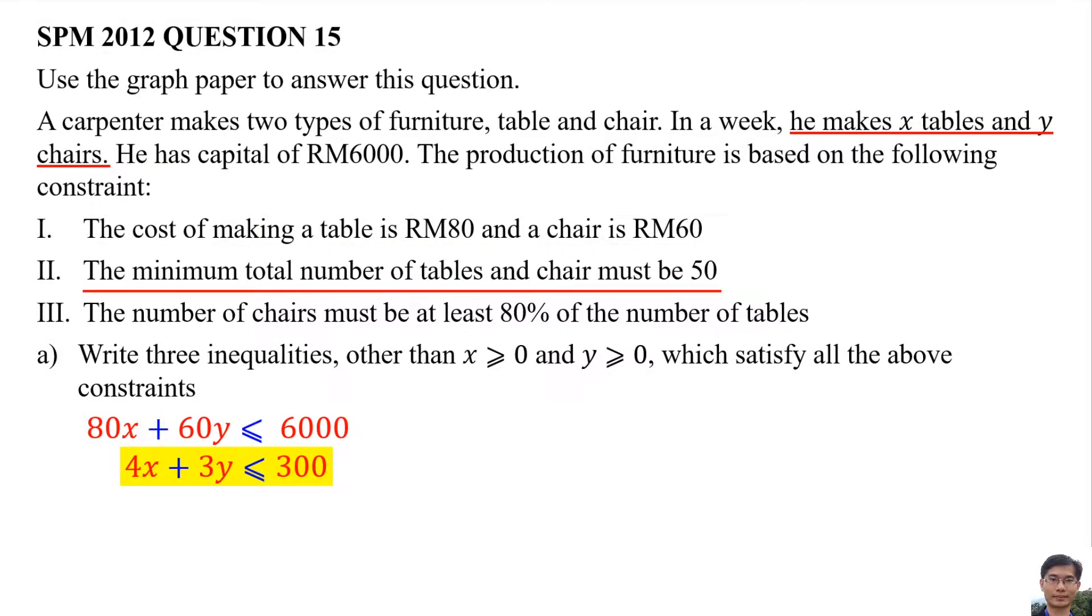The minimum total number of tables and chairs must be 50, so it means X plus Y more than or equal 50.